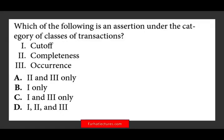So let's take a look at the first question: which of the following is an assertion under the category of classes of transaction? We have assertions that deal with transactions, and we have assertions that deal with account balances. You have to know which is which, and you have to know the meaning of them, because they're very helpful. Once you understand them, you're going to have a powerful tool to pass your CPA exam. Specifically, we are dealing with classes of transaction.